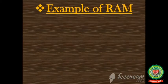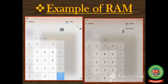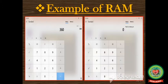Here is an example of RAM. RAM is just like a calculator where the information is retained as long as the calculator is on. The moment you turn off the calculator, all the data will disappear.